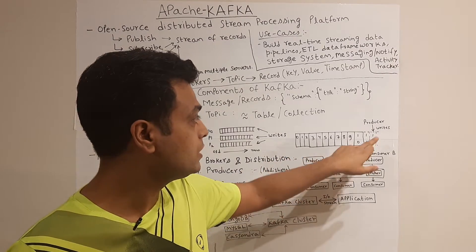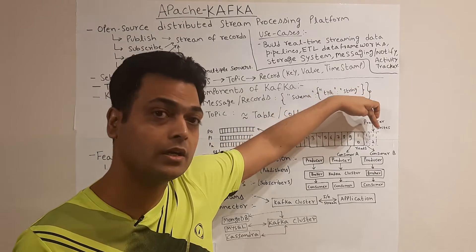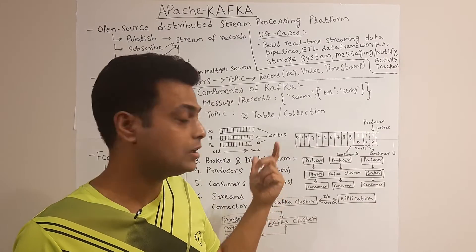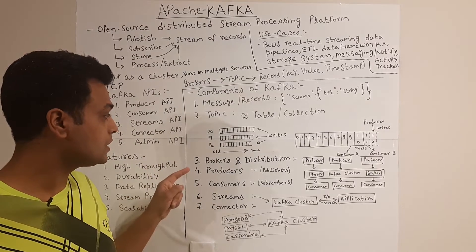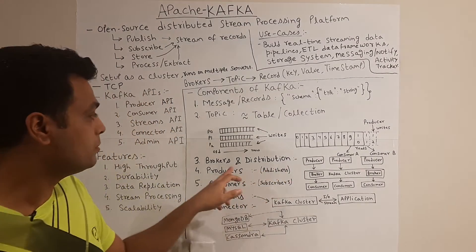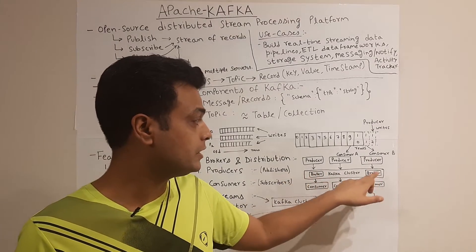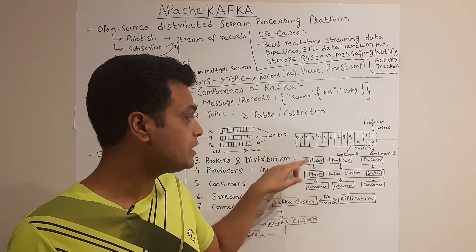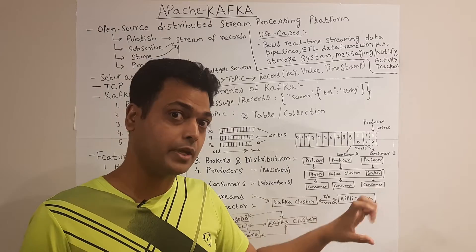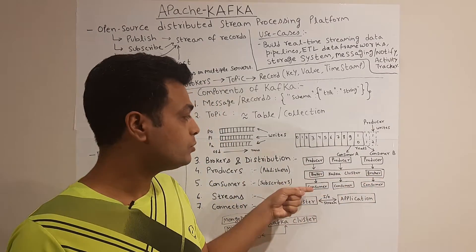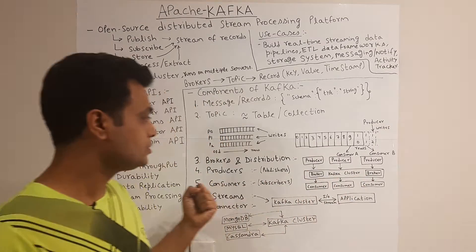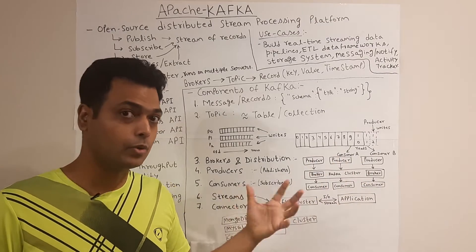You can have multiple producers — a producer can keep writing to a partition of a topic — and there can be multiple consumers reading the previously written records. Brokers are nothing but Kafka servers. The Kafka cluster acts as a broker and from that you can have multiple producers writing records on a particular topic and multiple consumers reading records of that topic. This diagram shows brokers, producers, and consumers.